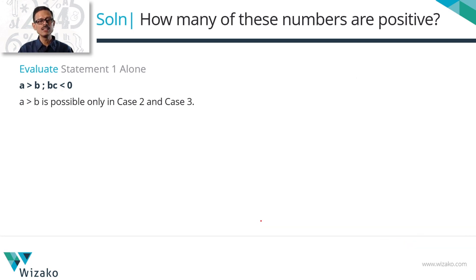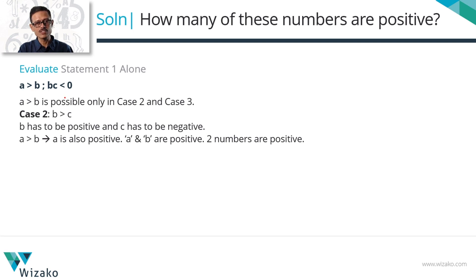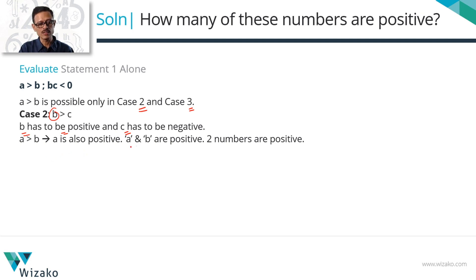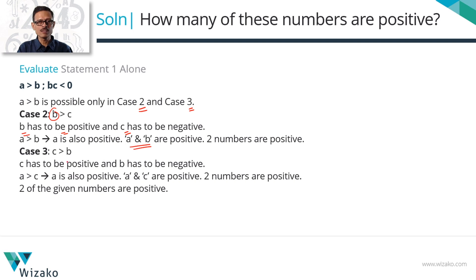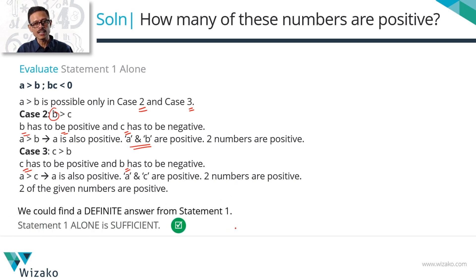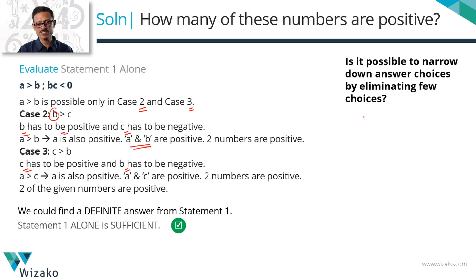To summarize Statement 1: A greater than B restricts us to cases 2 and 3. In case 2, B is the larger of B and C, so B is positive, C is negative, and A (further right) is positive — two positive numbers. In case 3, C is larger, so C is positive, B is negative, and A is positive — again two positive numbers. Unique answer confirmed. Statement 1 alone is sufficient, narrowing answer choices to A or D.